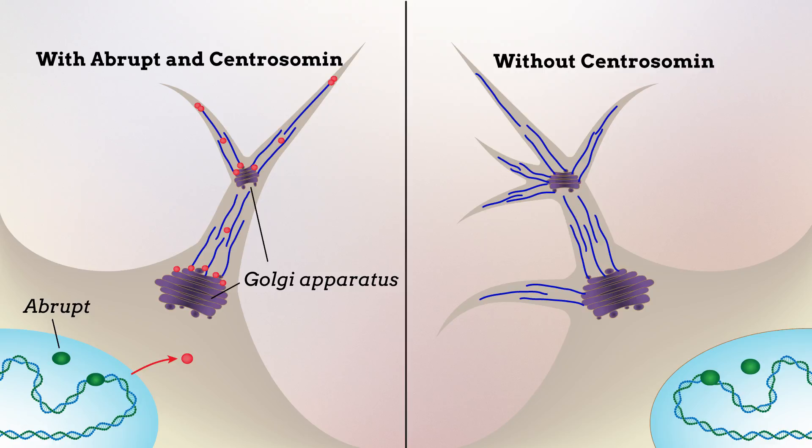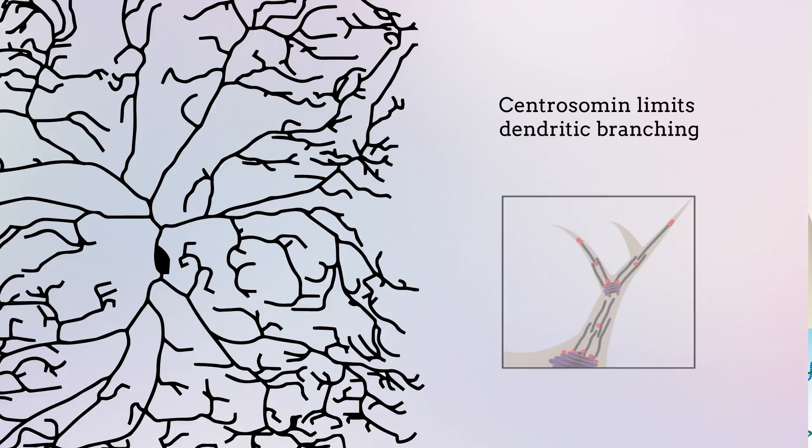However, eliminating centrosomin function prevented abrupt from restricting dendritic branching, leading to excessive dendrite formation. This occurred because without centrosomin, microtubules were free to push out in any direction, thereby forming new dendrites.